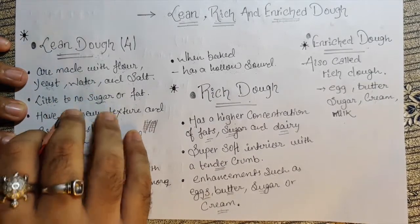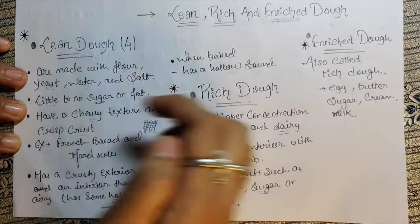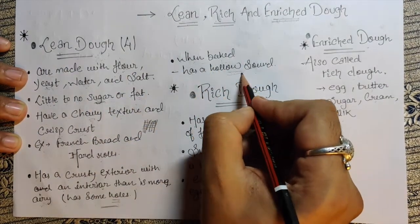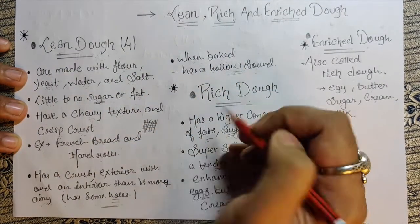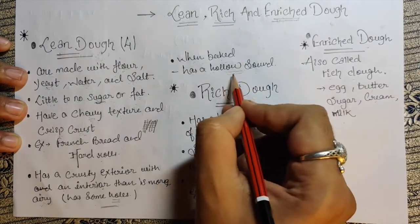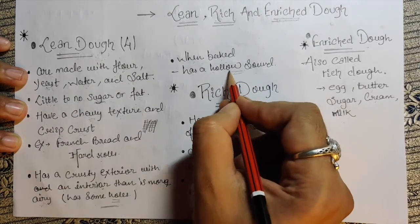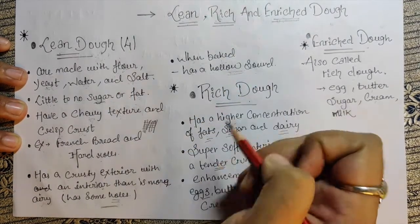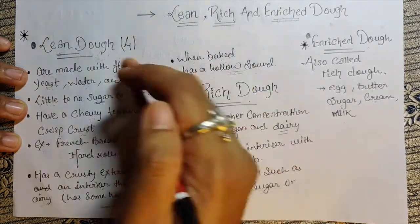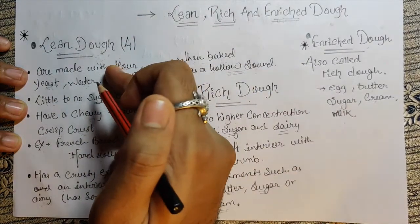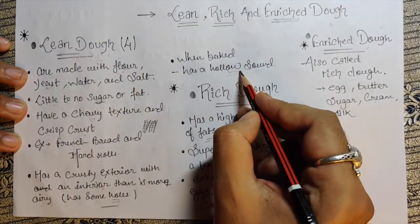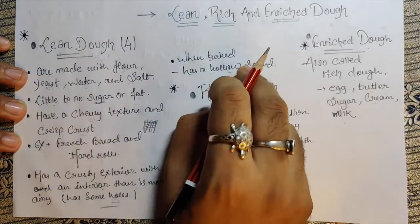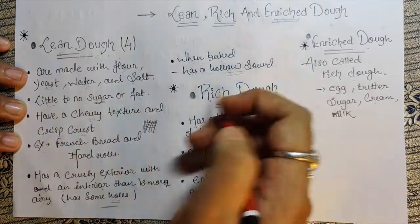How to figure out that lean dough is perfectly baked? Once baked, it has a hollow sound when you knock it. You can easily figure out the sound — completely hollow sound karega, tab samaj jana ki aapki lean dough bread perfectly baked ho chuki hai.